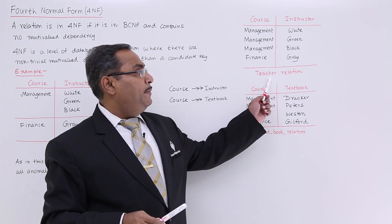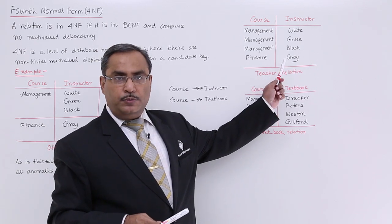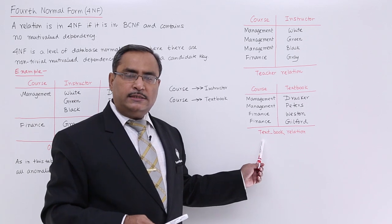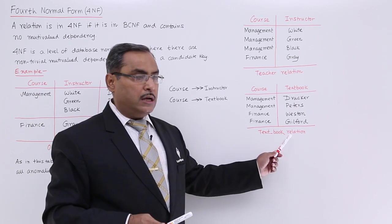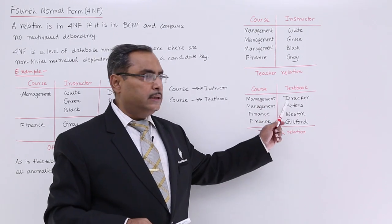Here we are having one teacher relation consisting of course and instructor attributes and the respective column details. And here, this is our text underscore book relation consisting of course and the textbook attributes with all other column details.